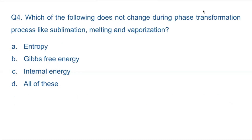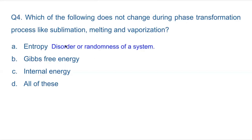Question number 4: Which of the following does not change during phase transformation processes like sublimation, melting, and vaporization? Sublimation means change of phase directly from solid to gas, melting means solid to liquid, and vaporization means liquid to gas. Entropy means disorder or randomness of a system — it will definitely change whenever there is a change of phase. When solid becomes liquid, entropy increases; liquid to gas, entropy increases.